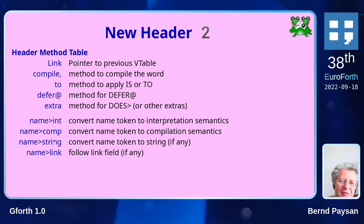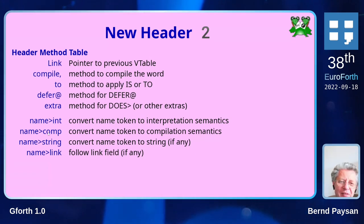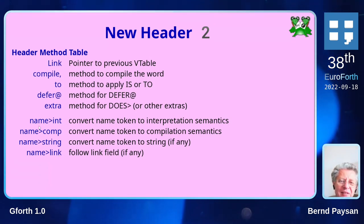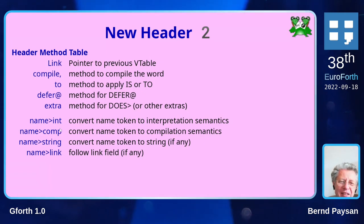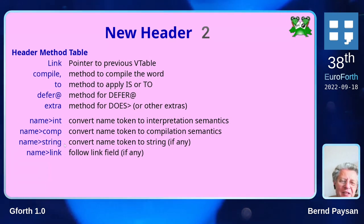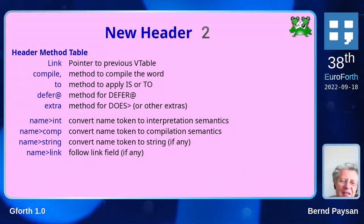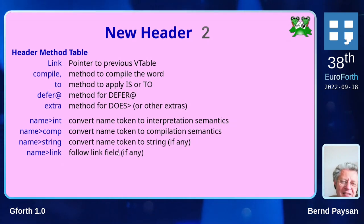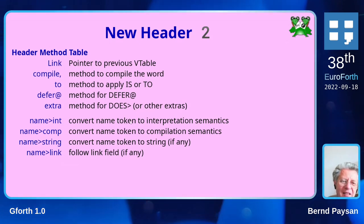We have functions for the name itself: name-to-int, name-to-comp, name-to-string, and name-to-link. These allow different ways to handle interpretation and compilation semantics. When you have special compilation semantics, name-to-comp gets replaced. We handle headerless words where name-to-string returns an empty string without storing it, and name-to-link returns zero even when we don't store the link — compressing headerless names like colon-no-name.